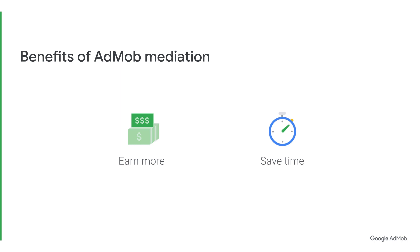If you're spending a lot of time setting up and managing multiple networks, mediation can help you save time with automated features like real-time CPM, ad network optimization, or ANO for short, or mediation groups that can help scale your setup. You can learn more about these features in our next mediation video in the description below.